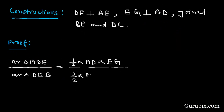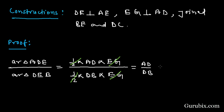In triangle DEB, DB is the base and EG is the perpendicular. Cancelling (1/2) with (1/2) and EG with EG, we are left with AD/DB. We call this Equation 1. The reason is: area of a triangle = (1/2) × base × height.